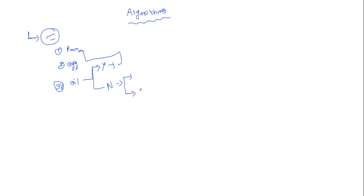So if oil is there I proceed; if oil is not there I buy it, then put the oil into the pan, break the egg, and do the cooking process. That step-by-step process is called an algorithm. An algorithm is a step-by-step instruction to complete a particular work.